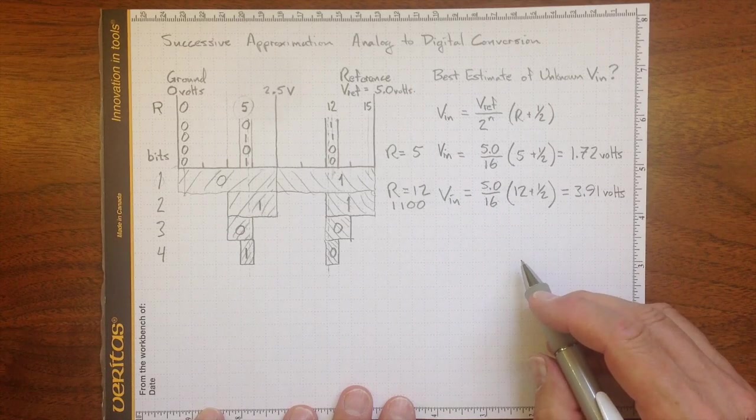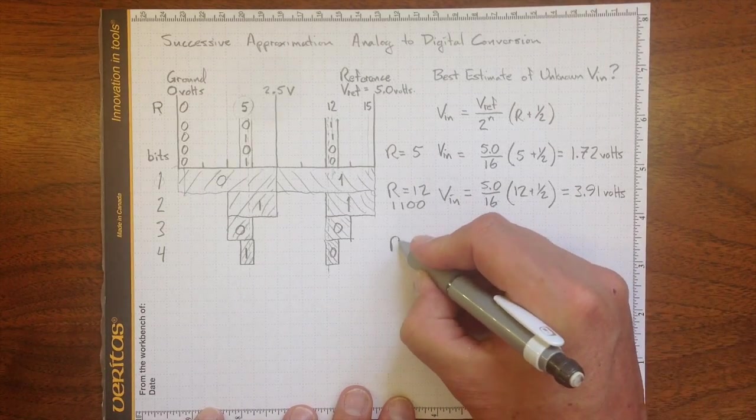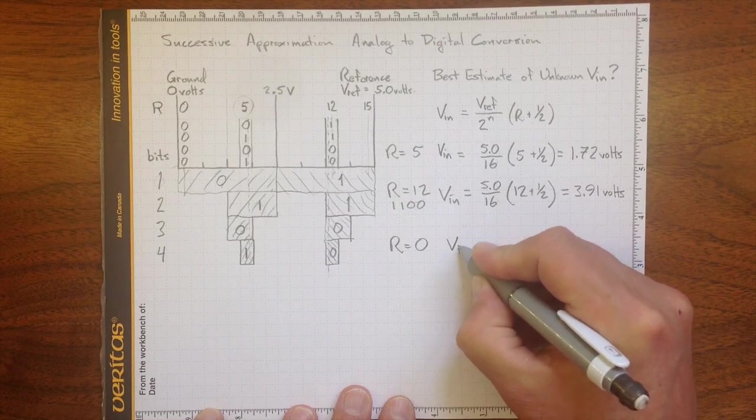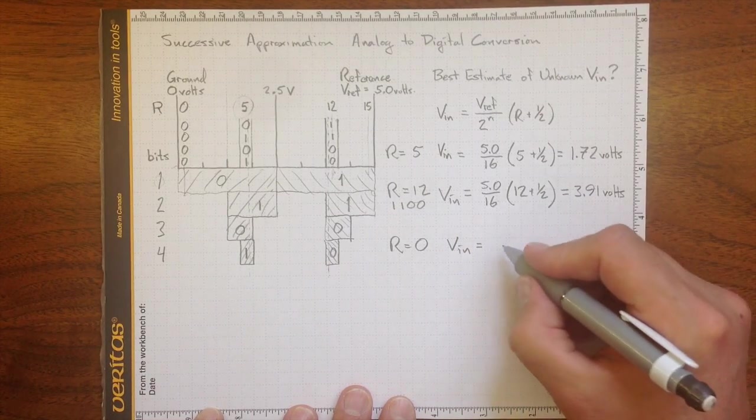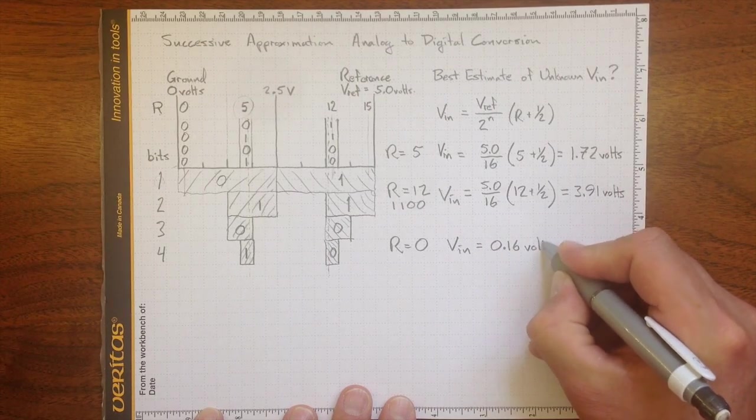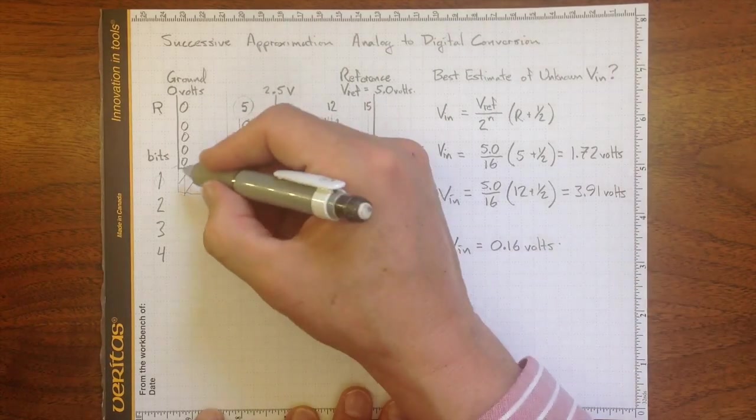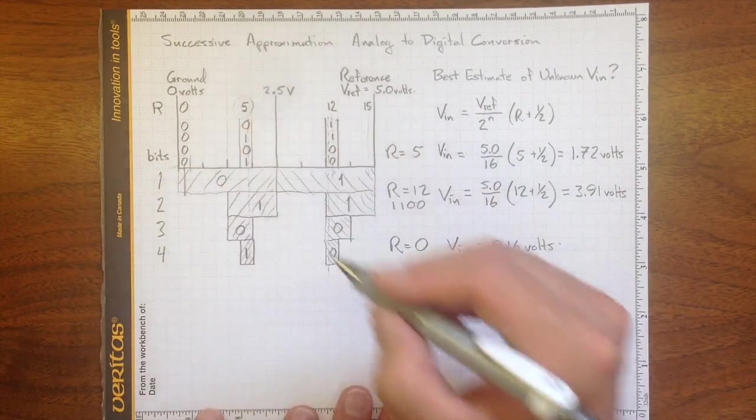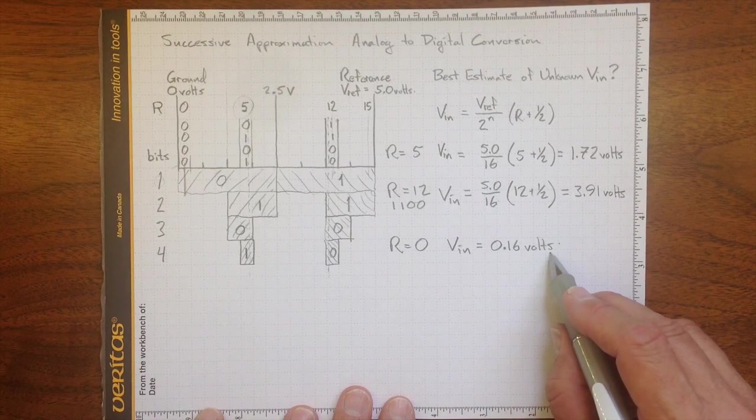And let's try a couple of limiting tests. Suppose R was equal to 0. That would give us Vn, our estimated Vn, as 0.16 volts. So not 0 volts, it'll tell us that we're somewhere in this first zone here, and that's about the middle of that first zone, 0.16 volts.